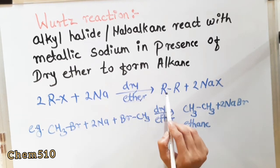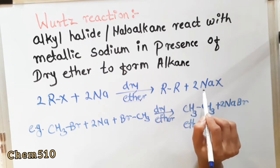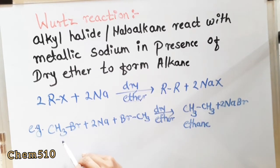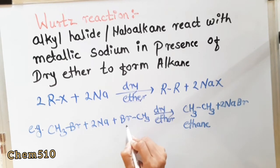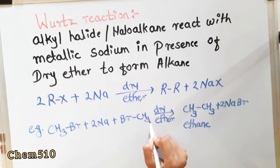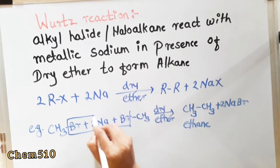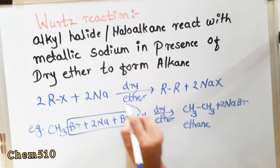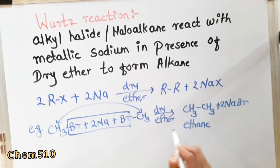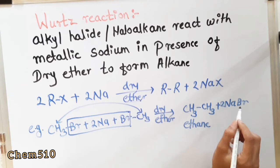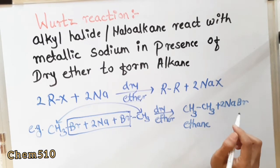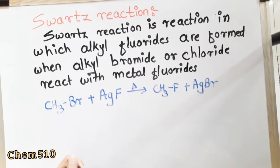For example: CH₃Br + 2Na + CH₃Br in the presence of dry ether gives CH₃CH₃ (ethane), and NaBr is the byproduct. So this is the Wurtz reaction.